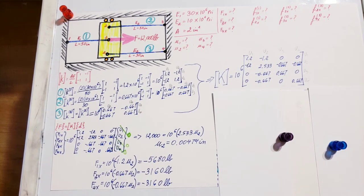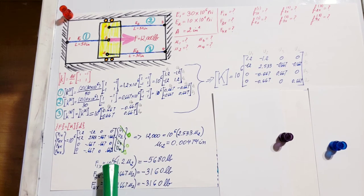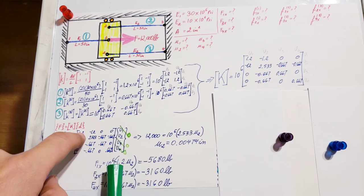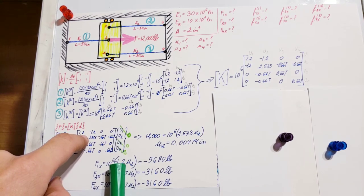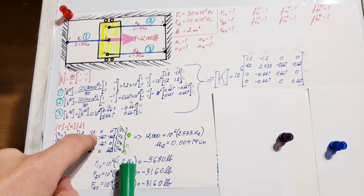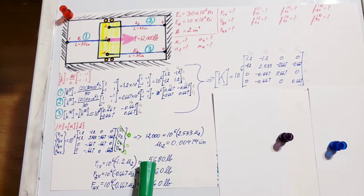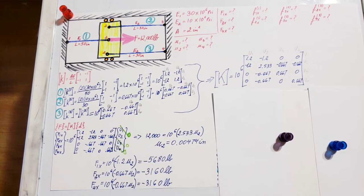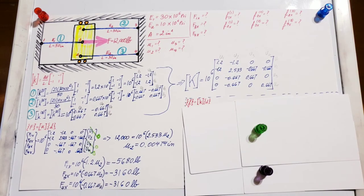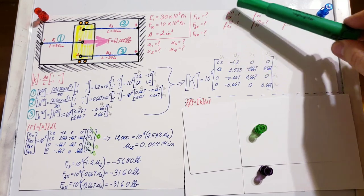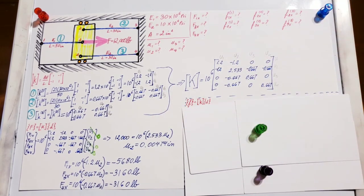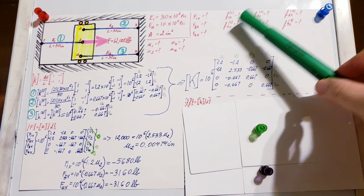f1x equals 10^6 times -1.2 times u2. This gives us the value for our global force: -5,680 pounds for the first one. Here are the other two as well.